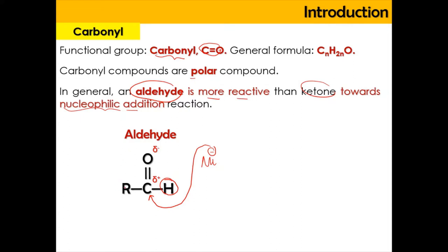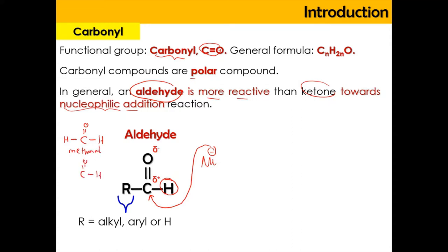The R here can be any alkyl, aryl, or it can also be hydrogen. So when C double bond O and H is attached with another H, it is known as methanal. If C double bond O and H is attached with CH3 — consisting of two carbons — then it is going to be ethanal. It can also have a benzene ring attached.